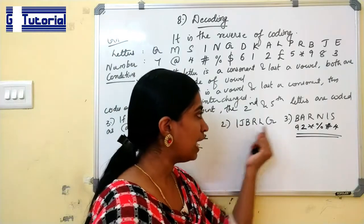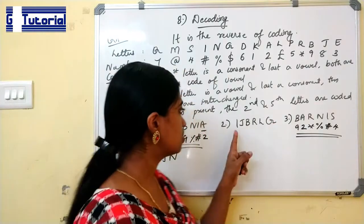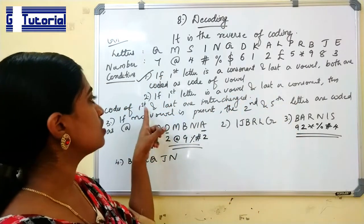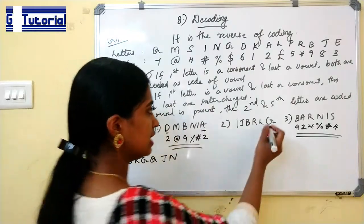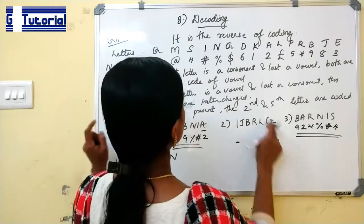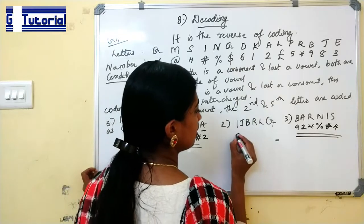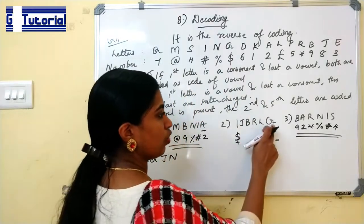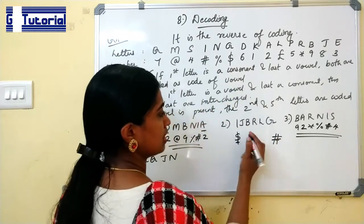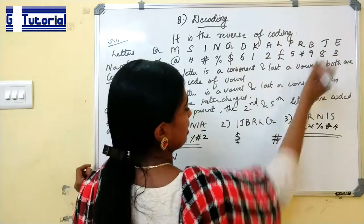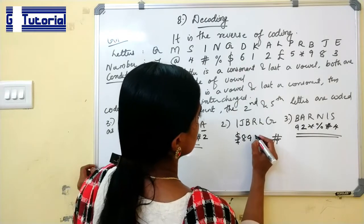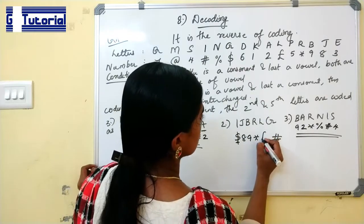Next question. It starts with a vowel and ends in a consonant. So if first letter is a vowel and last is a consonant, then the codes first and last are interchanged. That is, G's code will appear for I and I's code will appear for G. What is the code for G? G's code is this, but it has to be interchanged. So code of G will come here. Code of I is hash, it will come here. The rest of the letters are J, code of J is 8. B is 9, R is star, L is this. This is the code.